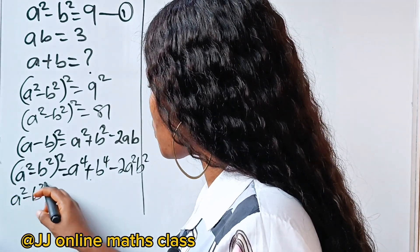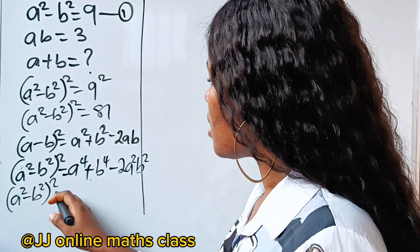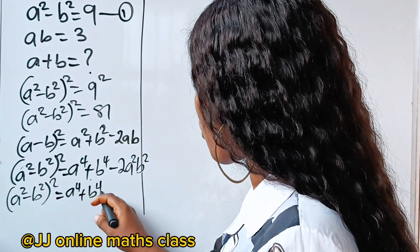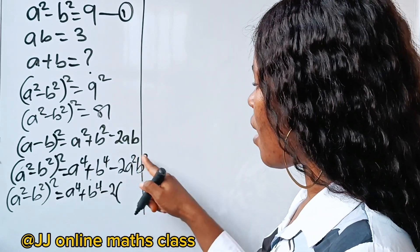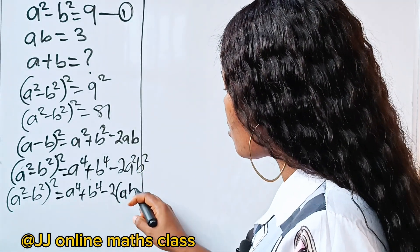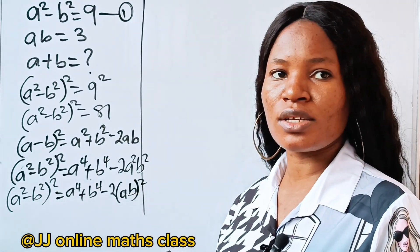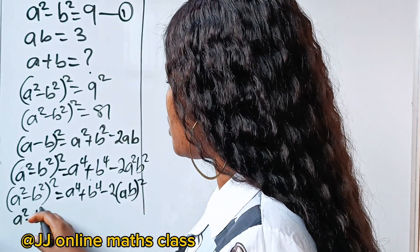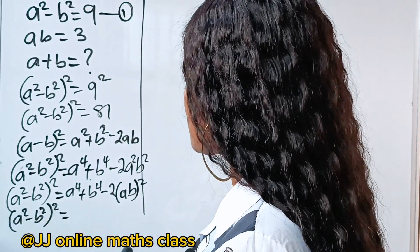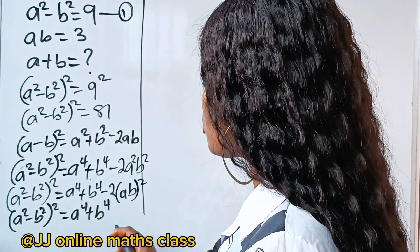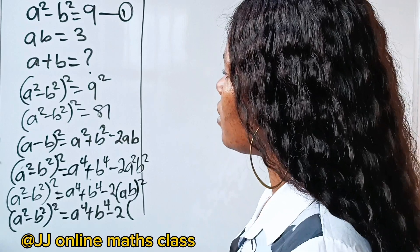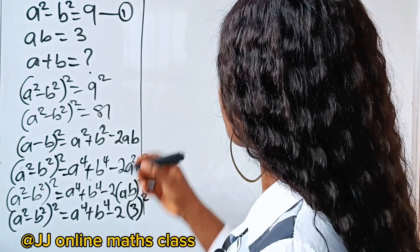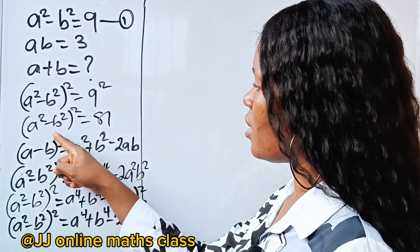So we have (a squared minus b squared) squared is equal to a to the power of 4 plus b to the power of 4 minus 2 times (ab) squared. We can actually square them. So we now have that (a squared minus b squared) all squared is equal to a to the power of 4 plus b to the power of 4 minus 2 brackets, (ab) squared. And (a squared minus b squared) squared is 81.